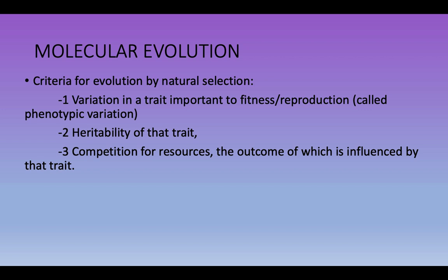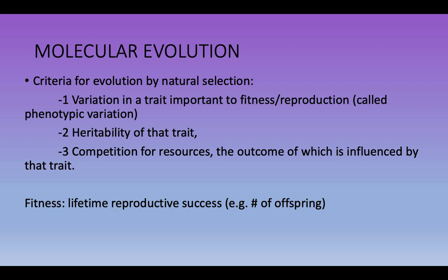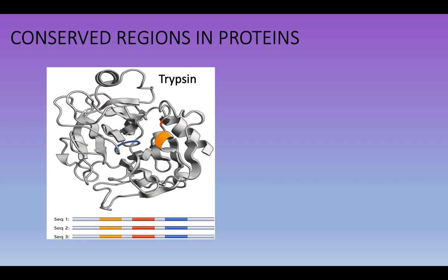There also needs to be some sort of competition for resources influenced by that trait — the trait has to be associated with some sort of consequence. This brings up the idea of fitness. The commonly heard phrase is 'survival of the fittest,' but we're not really talking about a specific individual. What makes an organism more fit? The currency of an evolutionary biologist is lifetime reproductive success — basically the number of offspring you produce and how successfully you pass on your genetic information to the next generation.